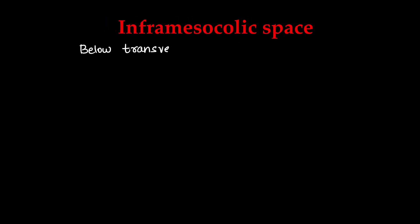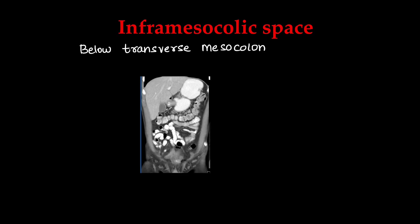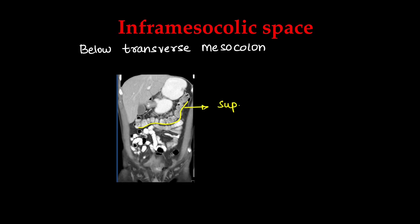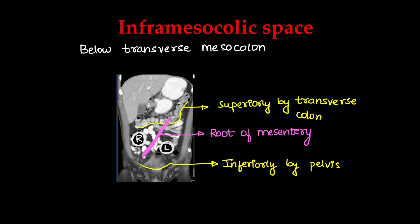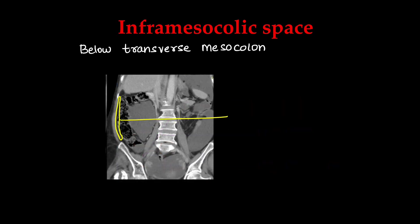The inframesocolic compartment is below the transverse mesocolon, superiorly bounded by the transverse colon and inferiorly extending to the pelvis. It is divided into right and left halves by the root of the small bowel mesentery. The paracolic gutters are the peritoneal spaces along the ascending and descending colon, on the right and left sides respectively.